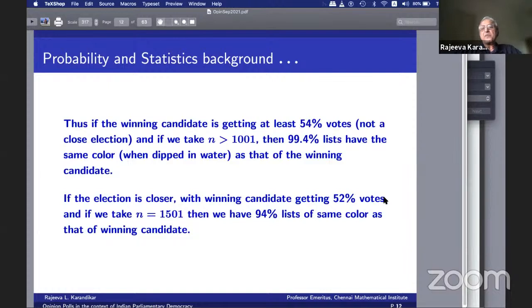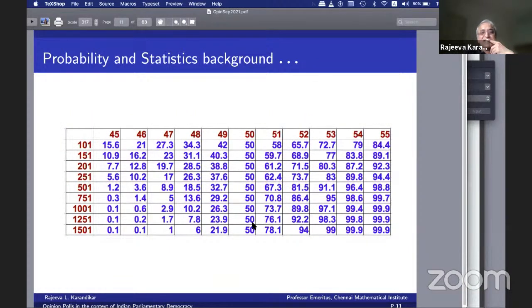If the winning candidate has at least 54% votes, that is, it is not a closed election, then if we take N to be bigger than 1000, 1001, our 99% is achieved. This is telling you that out of 1 lakh, a size of 1500 will still do, even if it is 52-48. The percentage doesn't matter. Just the majority matters. Who is the majority?